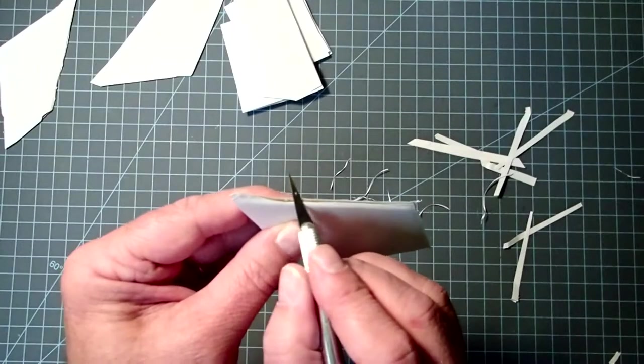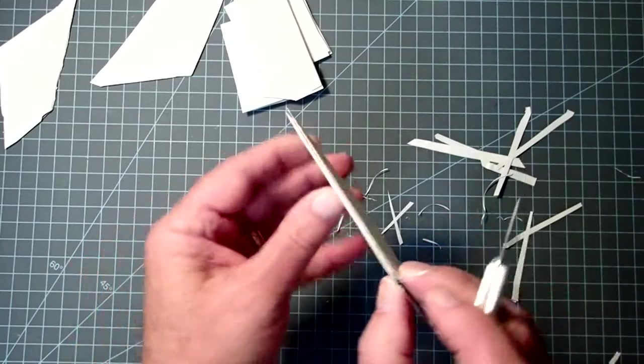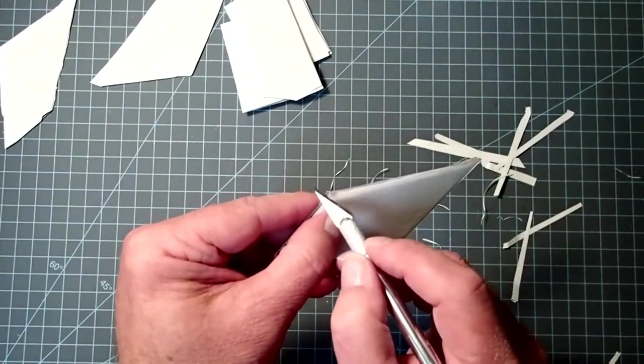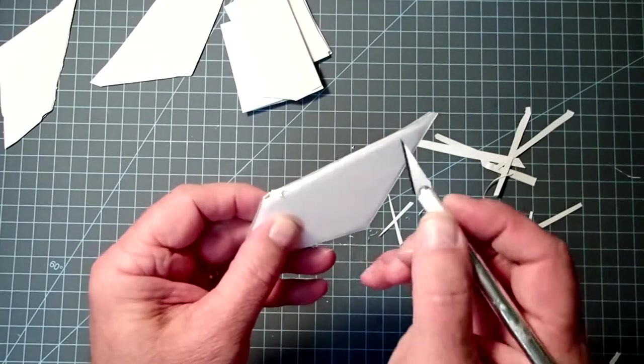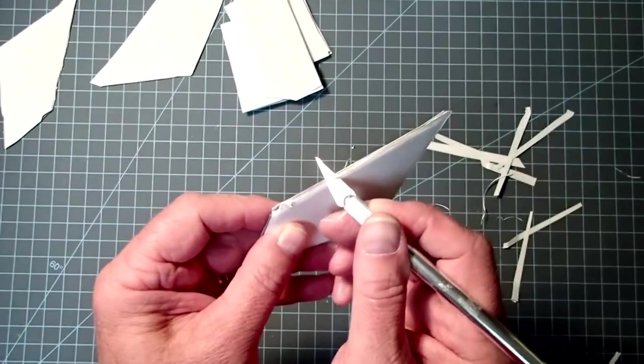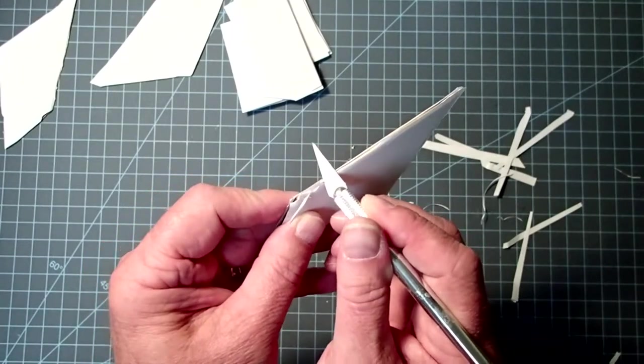So I'm just going in a little bit here. I'm going to do this on both sides, again, a little bit at a time. So there's the edge of the balsa.